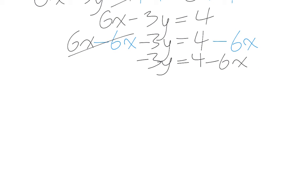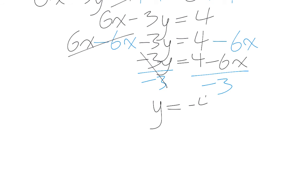We want to isolate y, but y is still stuck with this negative 3. So we're going to do the opposite operation to both sides of the equation, which means we're going to divide both sides by negative 3. Therefore, negative 3 divided by negative 3 cancels out, which leaves me with just y. 4 divided by negative 3 is the same thing as negative 4 over 3, and negative 6x divided by negative 3 is positive 2x.